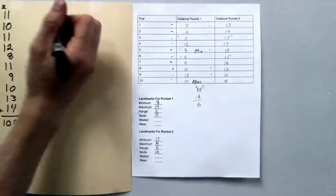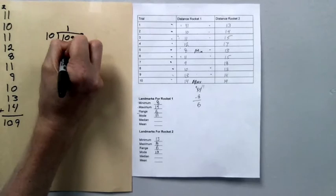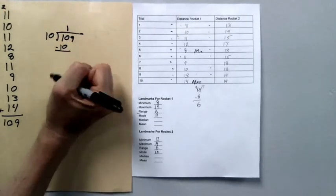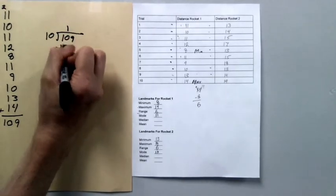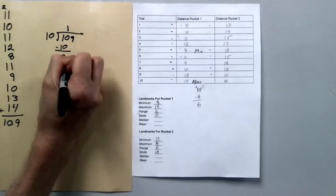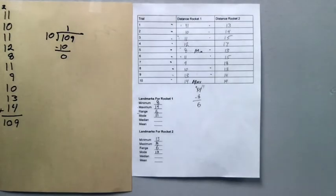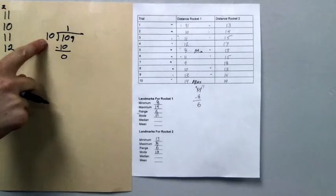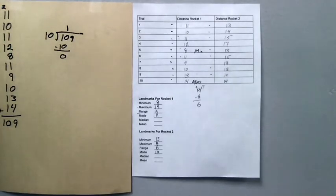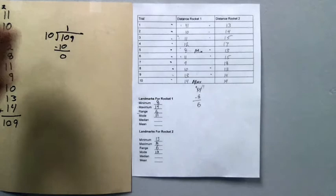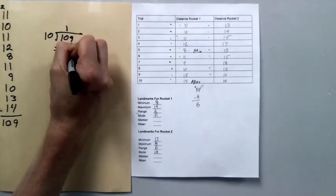Then I multiply. 1 times 10 is 10. My next step is I subtract. The difference between 10 and 10 is 0. And then I check. Is 0 smaller than 10? It is, so I'm probably doing okay. And then finally, my last step, of course, is I bring the 9 down.